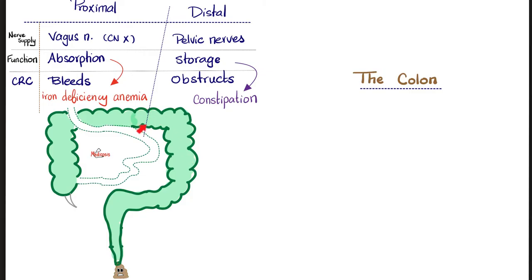This area near the splenic flexure is very vulnerable because it receives blood from distal small blood vessels. So if you had a car accident and lost tons of blood, developing extracellular fluid volume depletion, this area will be extremely vulnerable to ischemia.